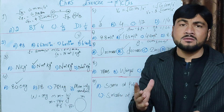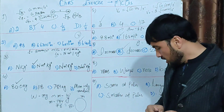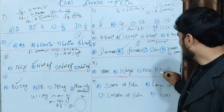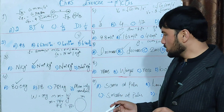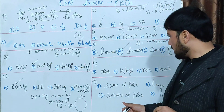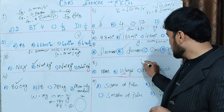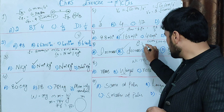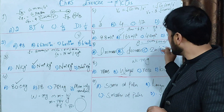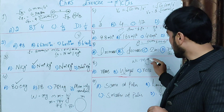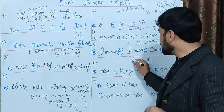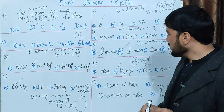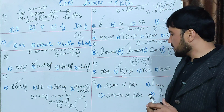MCQ: When an object moves to a different height and g changes, what changes — mass, weight, neither, or both? Mass is constant regardless of location. Weight W = mg changes because g changes with altitude. So weight changes but mass does not. Option B is correct.